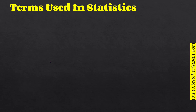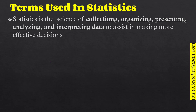Let's begin by looking at some of the terms used in statistics. The first is the word 'statistics' itself — what do you think it is? You can pause the video and think about it. We define statistics as the science of collecting, organizing, presenting, analyzing, and interpreting data to assist in making more effective decisions.